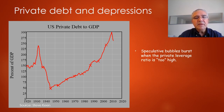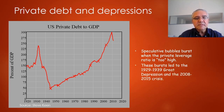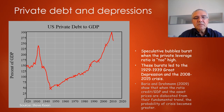You can see that the periods of peaks in US private debt to GDP are the periods that coincide with two great crises: the 1929–1933 crisis and the 2008–2010 crisis. Borio and Draymond show that when the ratio of credit to GDP and asset prices are dislocated from their fundamentals, the probability of crisis becomes greater.